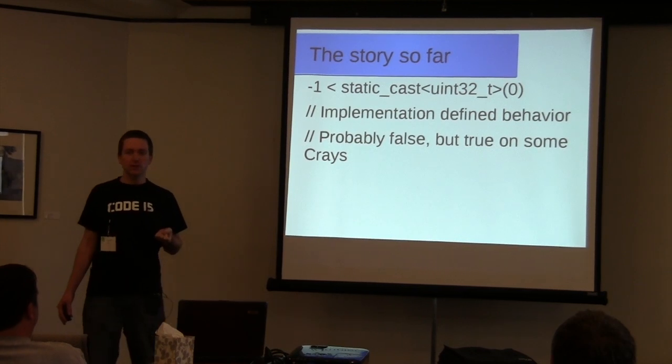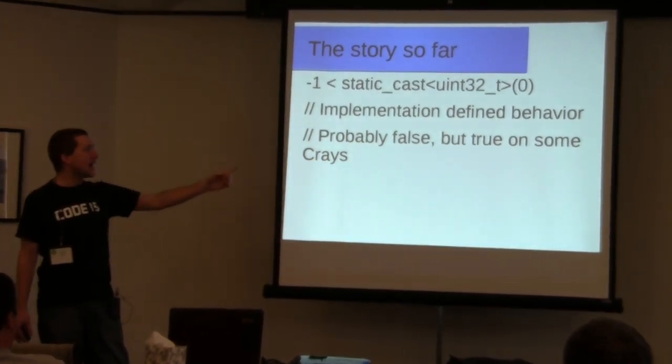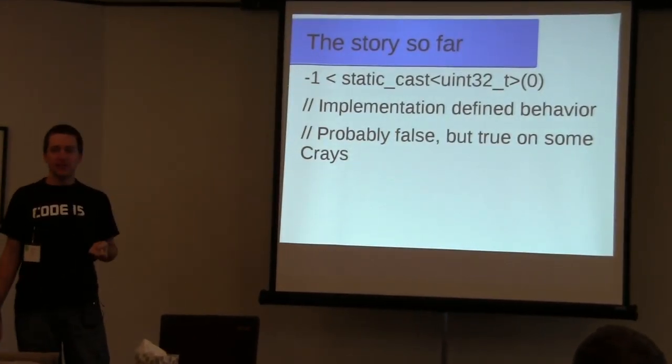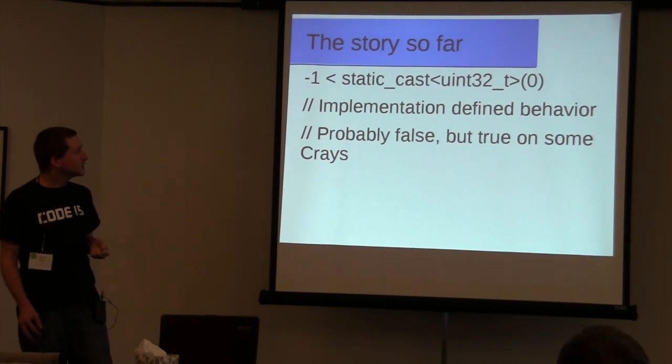How about this next statement? This actually is implementation-defined behavior. It's probably false, but on some systems — such as some old Cray systems — this could be true. The reason is that unsigned could actually be a 64-bit integer instead of a 32-bit integer, and then a uint32_t gets promoted to the 64-bit int, and then you have negative one is less than zero and it actually returns true. So you can't necessarily rely on uint32_t being the same as unsigned.